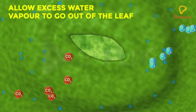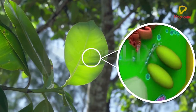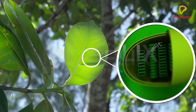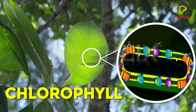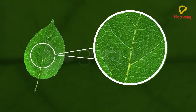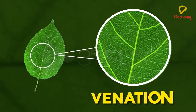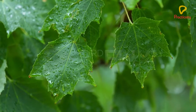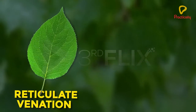The leaves of plants contain a green colored pigment called chlorophyll, which absorbs energy from sunlight. The arrangement of veins on the leaf blade is called venation. We distinguish between two major types of leaf venation: reticulate venation and parallel venation.